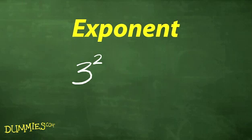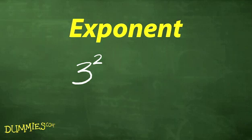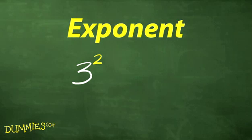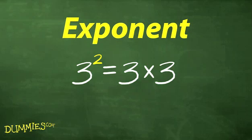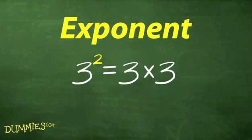An exponent is a small number written slightly above and to the right of a variable or number, such as 2 in the expression 3 squared. It's used to show repeated multiplication. An exponent is also called the power of the value.